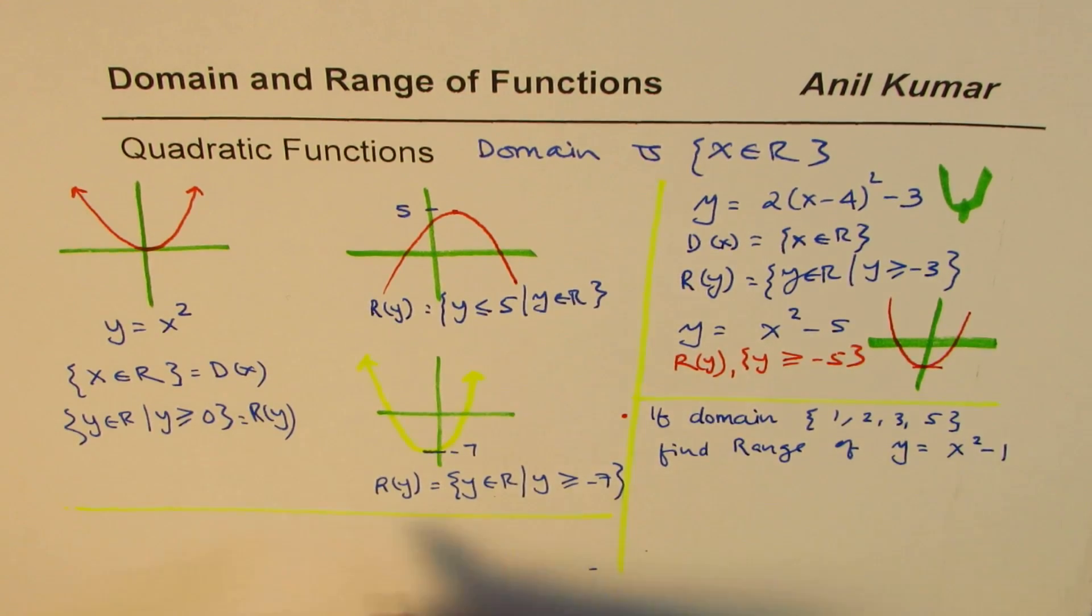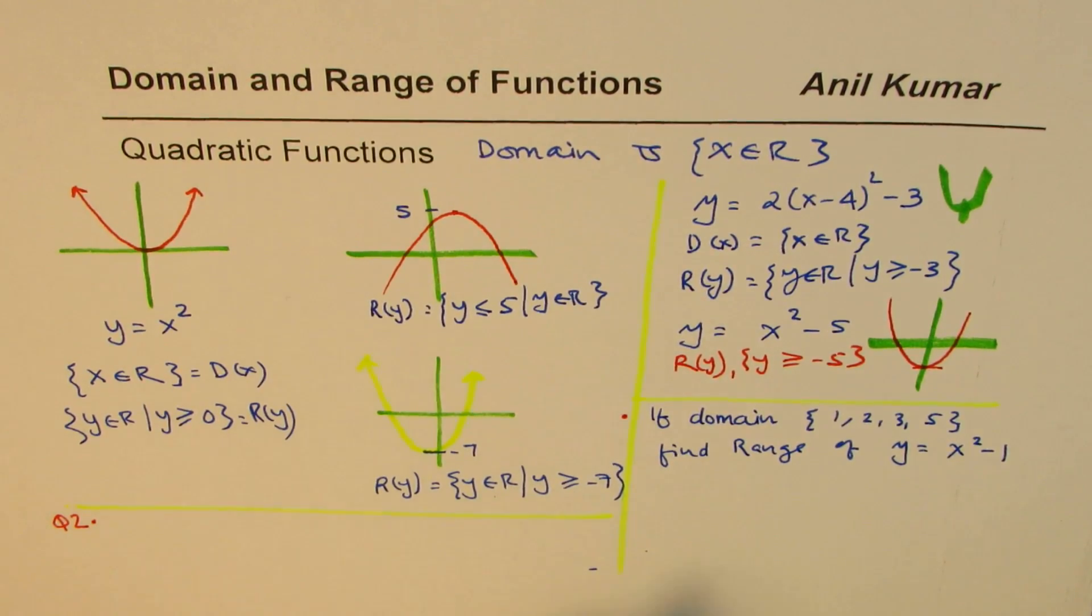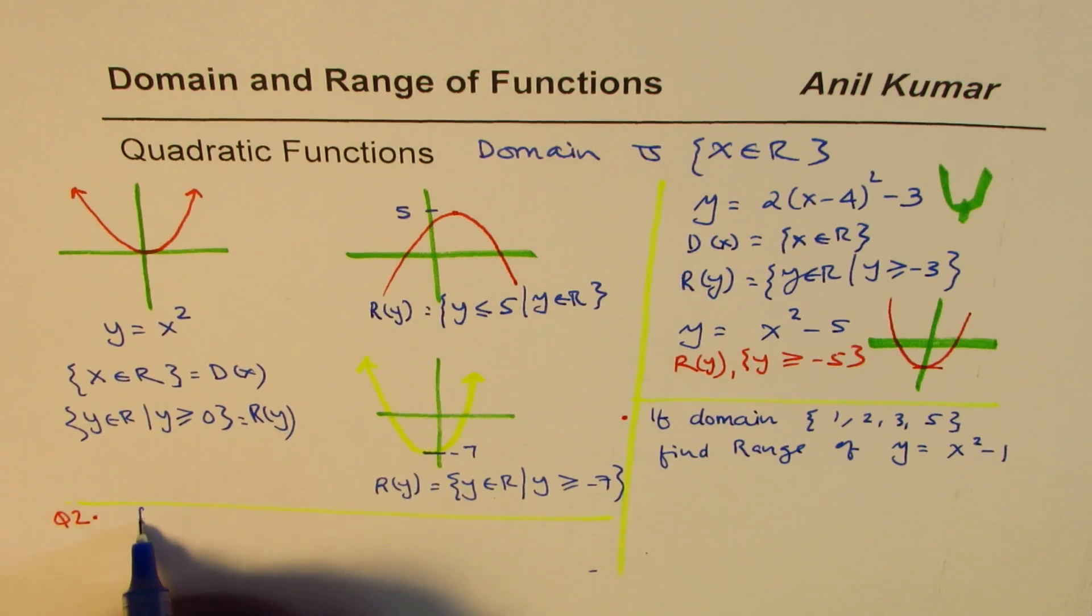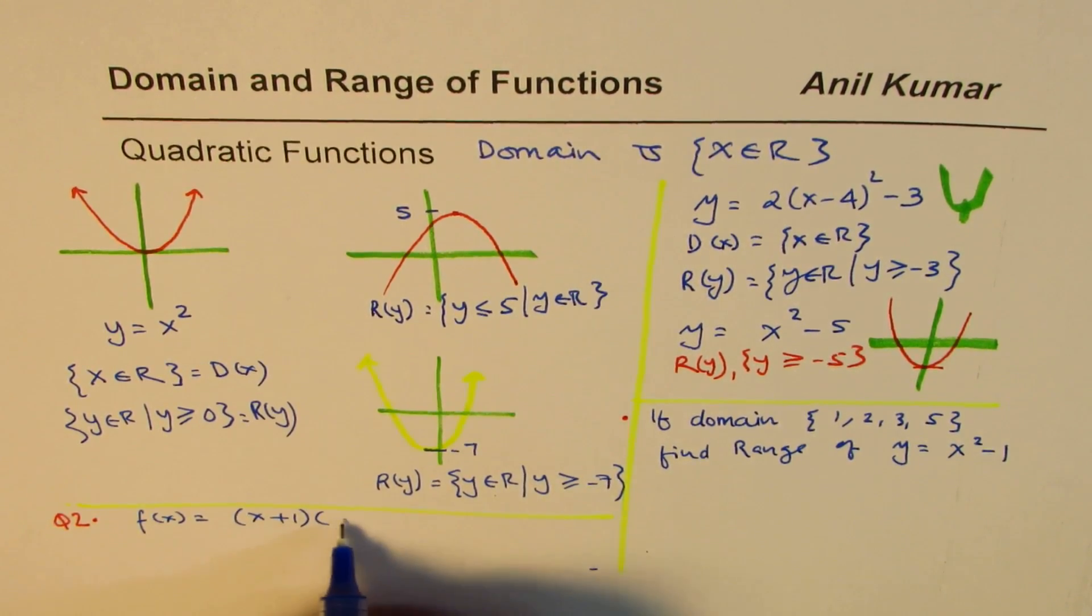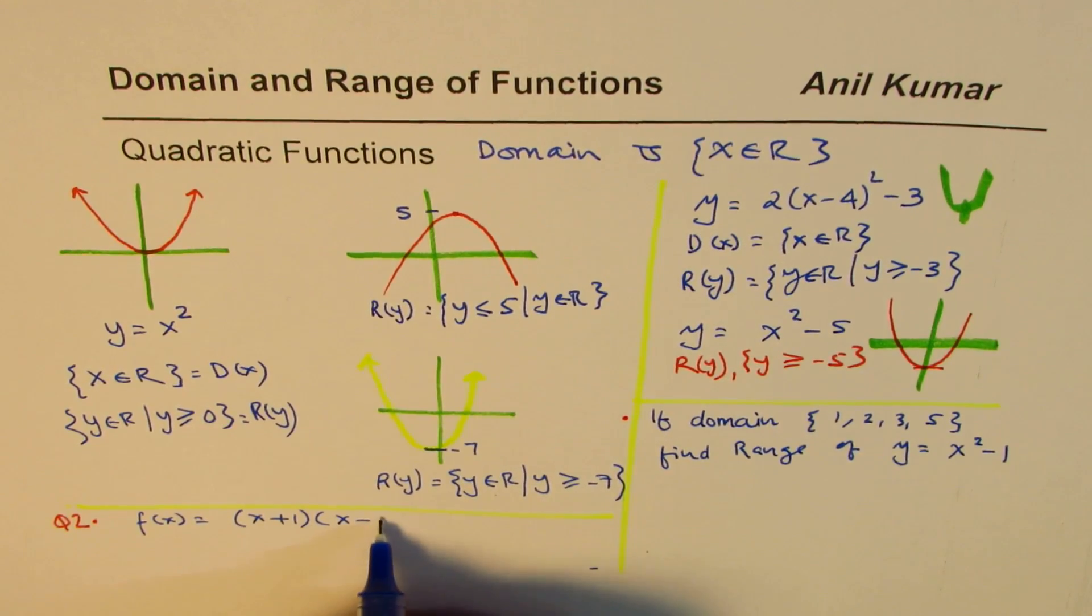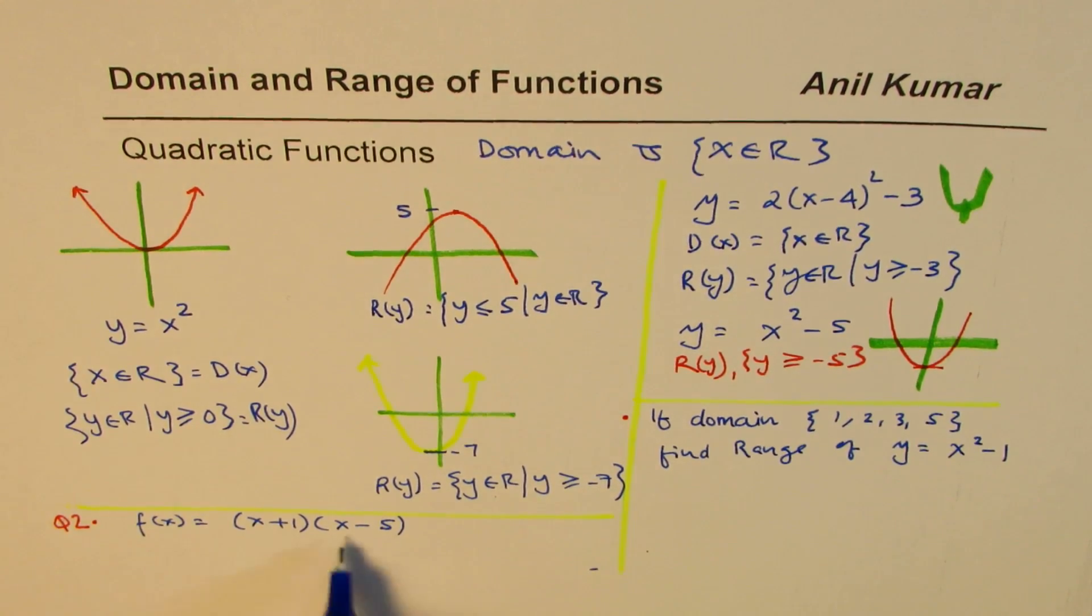The second question for you is, let me write down here, question 2. I'm giving you this equation in a different form. Let's say f(x) is equal to (x plus 1) times (x minus 5). You need to find domain and range for this function. So we have given you the factored form. How will you find domain range for this function?